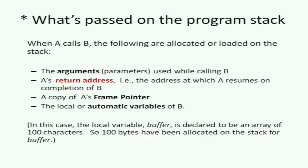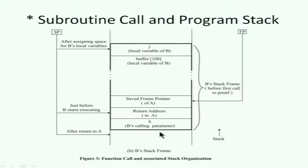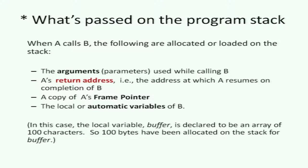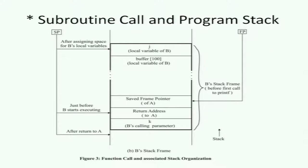In this case, the local variable buffer is declared to be an array of 100 characters, so 100 bytes have been allocated on the stack for buffer. There is a character buffer of 100 bytes in program B, and that's going to be allocated on the stack in B's stack frame — those 100 bytes for that array variable.